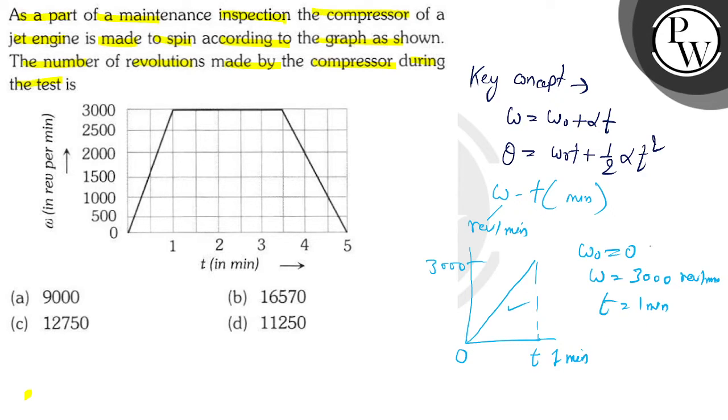Time here is one minute according to this part of the graph. So we can also use this, and alpha is what? Omega minus omega naught divided by t. What is value of omega? That is 3000. Time is one minute. That is 3000 revolutions per minute square. So here we will get the value of alpha.